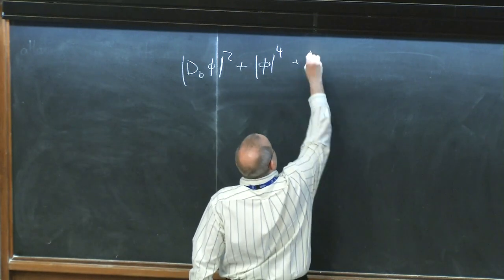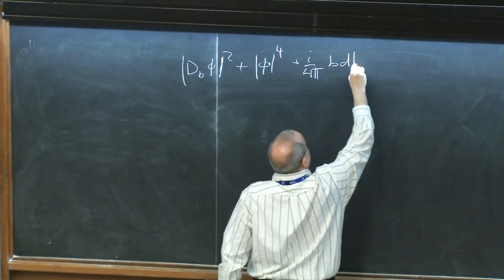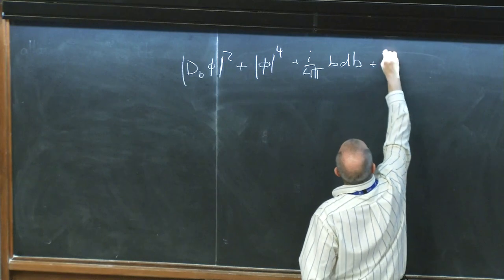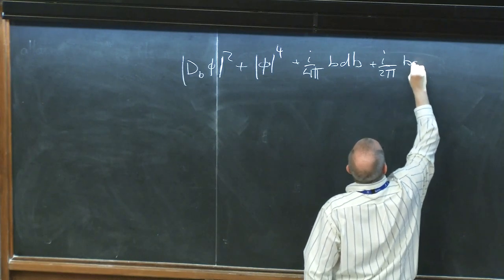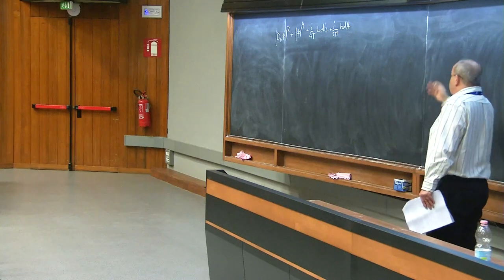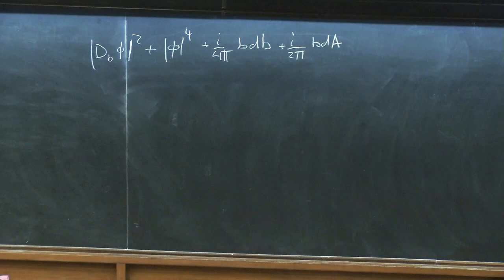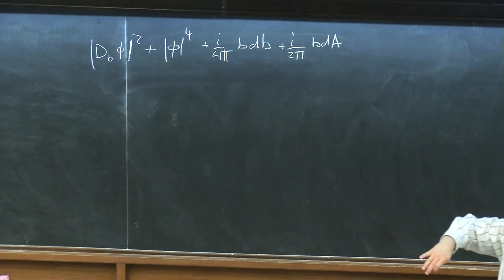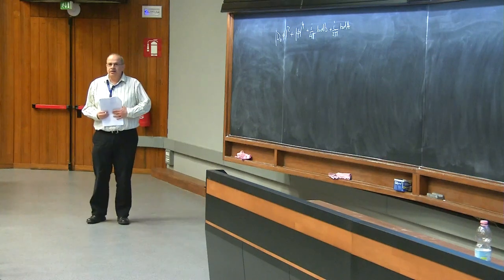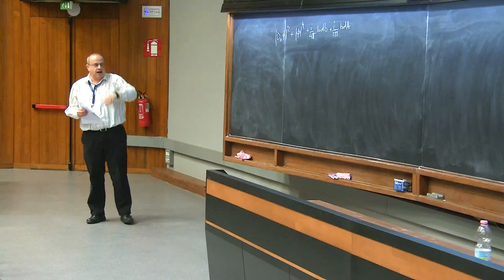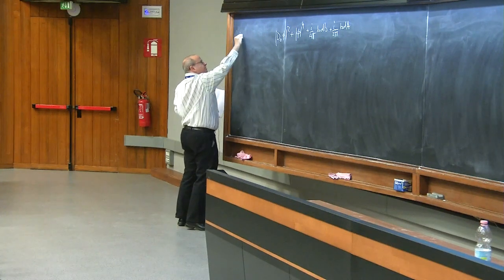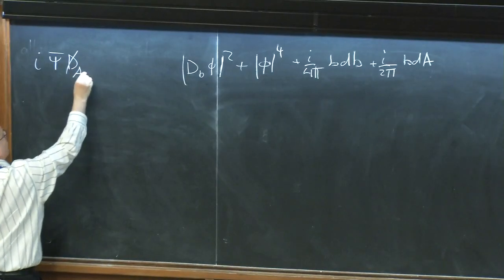We also add i over 4π BdB — so it's the Wilson-Fisher fixed point coupled to a gauge field with Chern-Simons level one, plus a coupling to background field (i over 2π) BdA. The theory has a global U(1) symmetry; A is our device to probe that symmetry. The claim yesterday was that this whole thing in the infrared is the same as a free fermion coupled to the same background field.